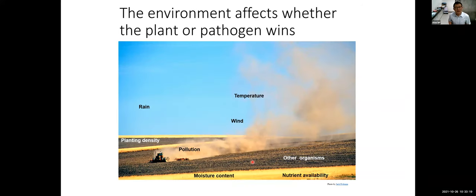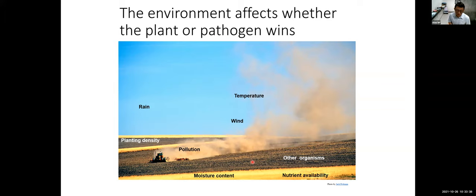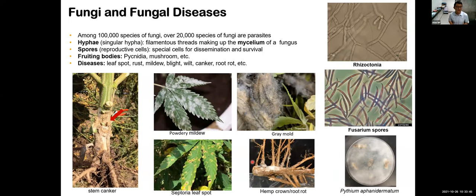I want to emphasize that the environment plays a critical role in that plant-pathogen interaction. Temperature, humidity, microbial diversity in the soil, nutrient status, and moisture all influence whether that interaction will turn into a disease or not. That's the basic concept in plant pathology.